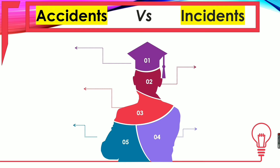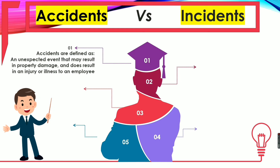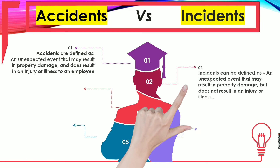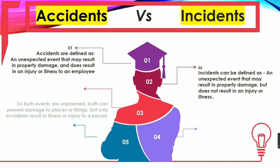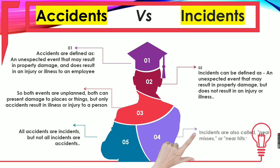An accident is defined as an unexpected event that may result in property damage and does result in injury or illness to an employee. An incident can be defined as an event that may result in property damage but does not result in injury or illness. Both are unplanned; both can present damage to a place or thing; but only an accident results in illness or injury to a person. All accidents are incidents, but not all incidents are accidents.